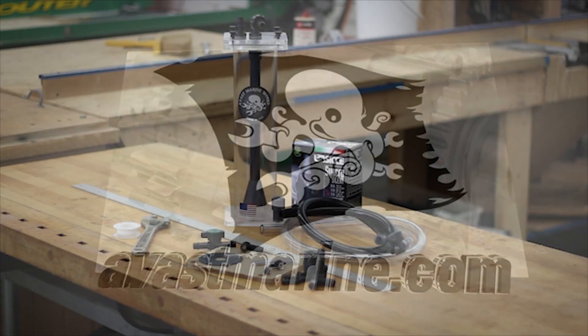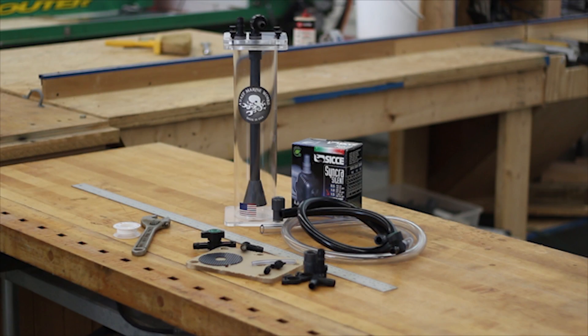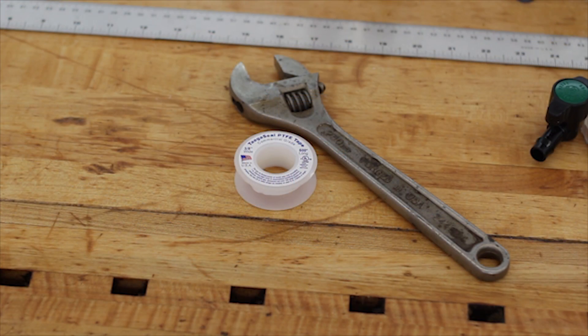Today we're going to be putting together a recirculating upgrade kit for one of our media reactors. In addition to the upgrade parts, you'll need some Teflon tape, an adjustable wrench, and a measuring tape.